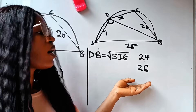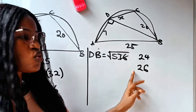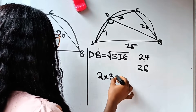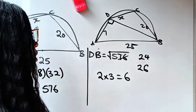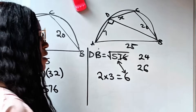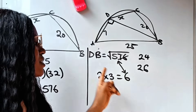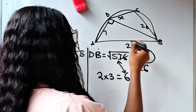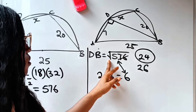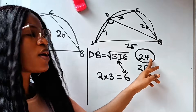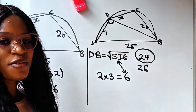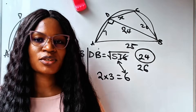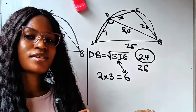To determine which one: after 2, the next number is 3, so 2 × 3 = 6. Compare 6 with 5 — since 5 is less than 6, the answer is the lesser number. Therefore, √576 = 24, and DB = 24. Write this trick in the comments if you enjoyed it!